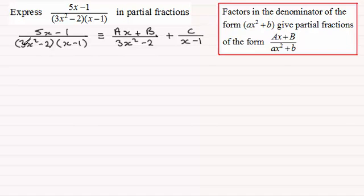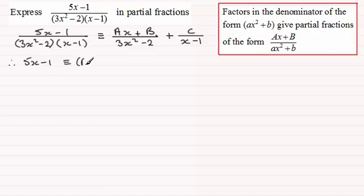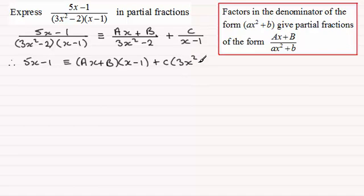Next, we multiply through by the denominator on both sides, so we end up with 5x minus 1 is identical to (Ax plus B) multiplied by (x minus 1), and then plus C times (3x minus 2).